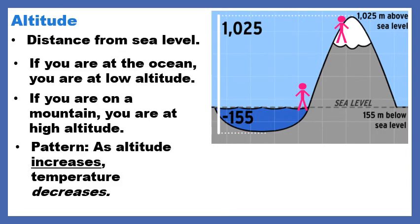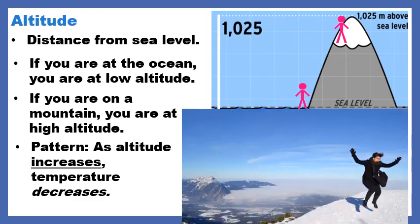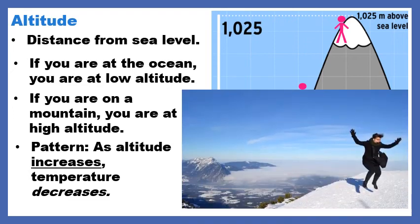There's a pattern here, because we're still talking about climate, and altitude does influence climate. The pattern is: as altitude increases, temperature decreases. As altitude increases, temperature decreases. And that explains why there's snow on mountaintops — the temperature is much colder than it is at sea level. Do you recognize anybody in this picture? It's me. I had a lot more energy then — it was only my first year teaching. I think someplace in Germany, but I know it was a very pretty view.